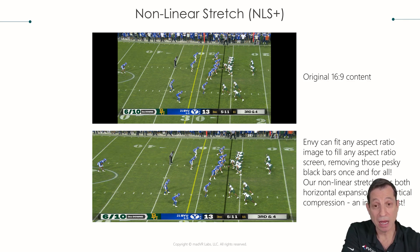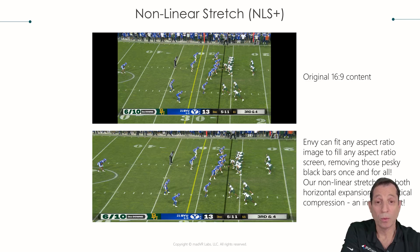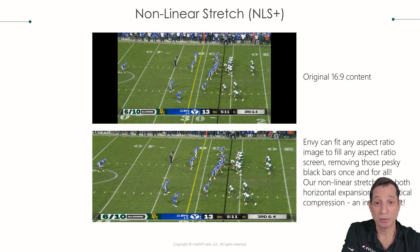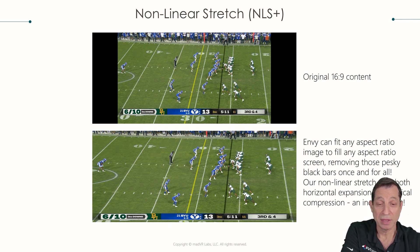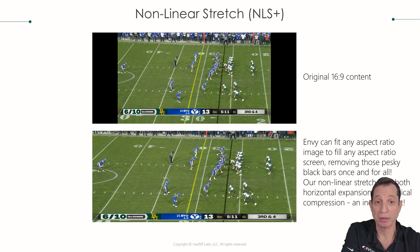This goes for 16:9 users too — whether you've got a large wall, a micro LED display, or just a 16:9 projection screen. Those with a 16:9 screen are used to seeing giant black bars above and below when watching a scope movie. With the Envy, you can remove about half of those black bars while the image looks perfectly natural, giving you a much more immersive experience.